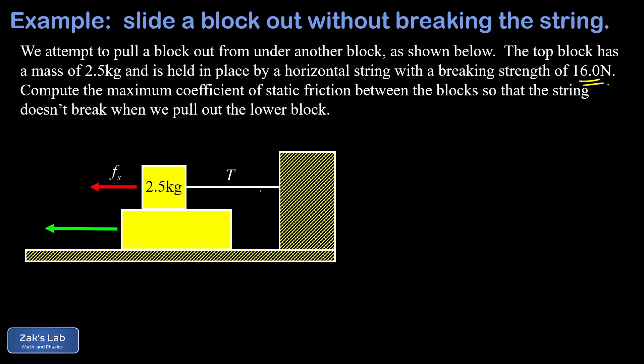So what happens as we pull harder and harder on this lower block is that we're creating a bigger and bigger leftward static friction force on our upper block, but it's not moving because the tension in the string keeps growing to balance that static friction force and hold the block in place. So there's the tension pulling to the right on this block.